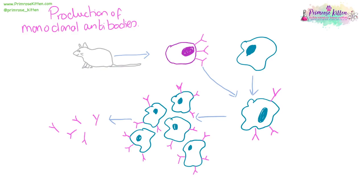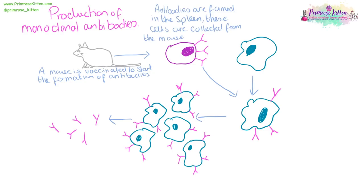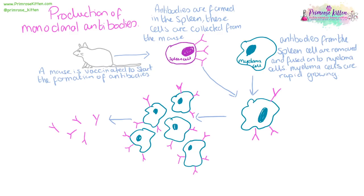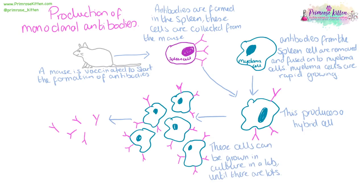For monoclonal antibodies: a mouse is vaccinated, which starts the formation of antibodies. After a while, cells from the spleen of the mouse — where the antibodies are formed — are collected. We can take a known cancerous cell line — myeloma cells — and fuse them together. After the antibody-producing cells and the cancer cell line have been fused, we end up with a hybrid cell. These hybrid cells can be grown in culture in a laboratory until we have lots of them. The cells and the antibodies can then be separated and the antibodies used for various things like pregnancy tests or cancer detection.